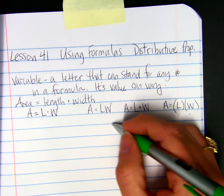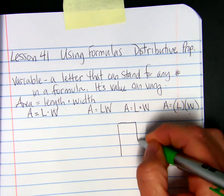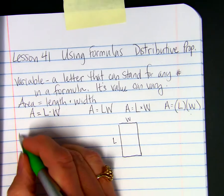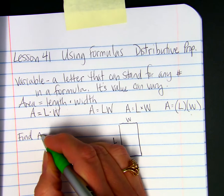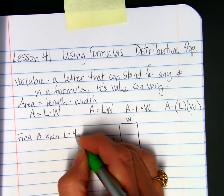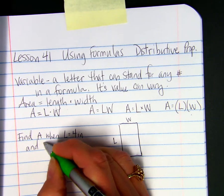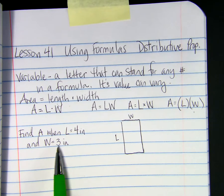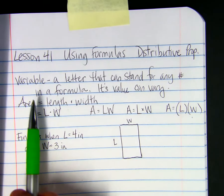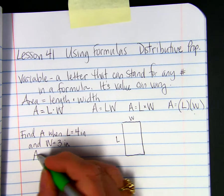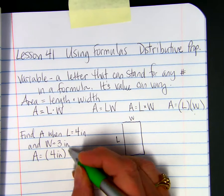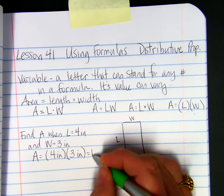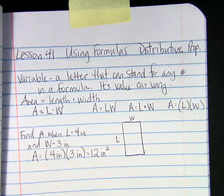For example, if we have a rectangle, here's the L, here's the W. We're going to do an example. Find A when L equals 4 inches and W equals 3 inches. To find the area, we're going to multiply our length and width. Since our length is 4 inches, we're going to multiply 4 inches and our width is 3 inches. We'll multiply those together. And we get 12 inches squared for the area.